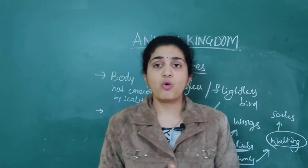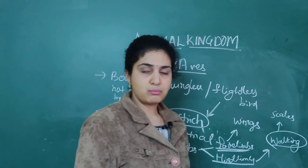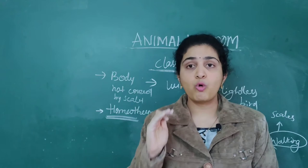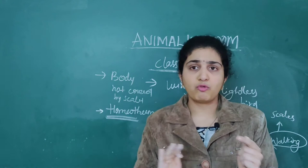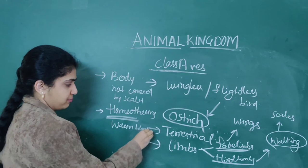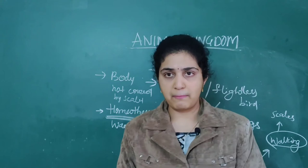All organisms covered so far are poikilotherms, but Aves are homeotherms. Homeotherms means they can maintain a constant body temperature — this is an important NCERT question. Mammals and birds are both homeotherms. When they shift from one place to another, their body temperature does not change. That is why these are called warm-blooded animals. Poikilotherms are cold-blooded; homeotherms are warm-blooded — remember this clearly.